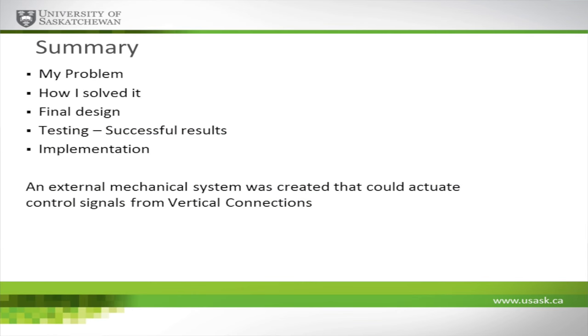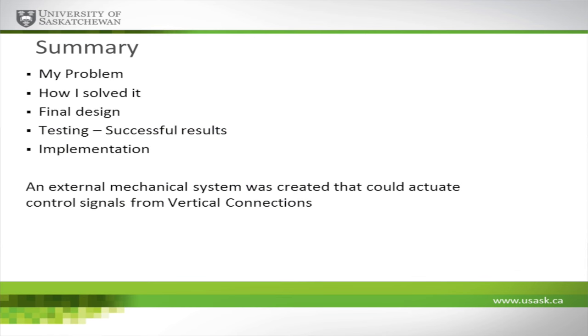In summary, my problem was creating an external solution that could take Vertical Connection's control signals and actuate elevator buttons physically. I solved it by evaluating three alternatives, selecting the motor arm lever design, and producing the 3D-printed button device you see here. Testing at Sherbrooke was successful - the buttons were pressed by the servo motors, confirming this works as a proof of concept. Even without the electrical integrated system, this external solution works and provides a foundation for implementation. The next step is full implementation, and we can take this further if we choose. Thank you very much.